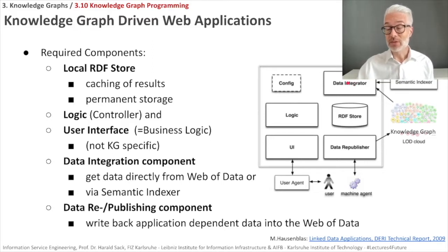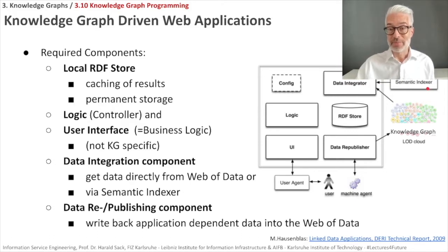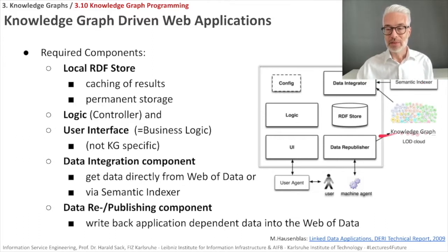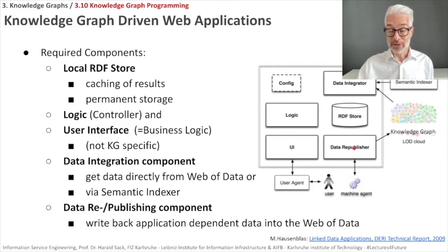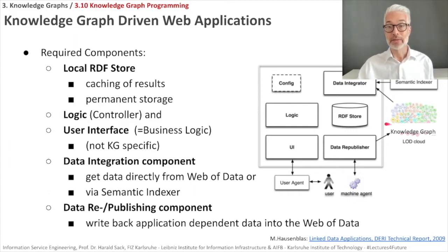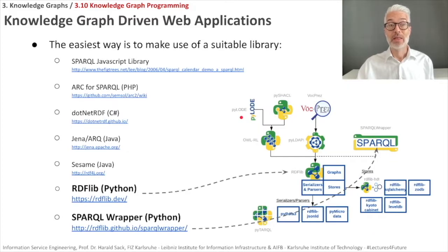Another way to use the data integration component is to access a kind of semantic search or semantic web search index, which gives you access to some web of data dataset. In the lower right corner, you also need a component to republish your data — something to write back your application-dependent data into the web of data. This doesn't look much more complicated than an average web application; you just need access to some kind of RDF store, internally or externally, usually available as linked data.